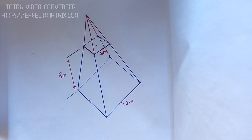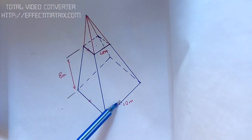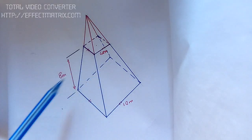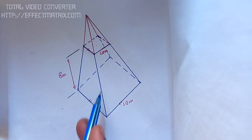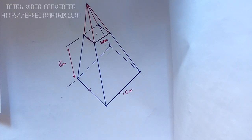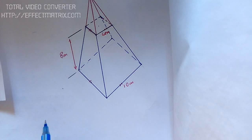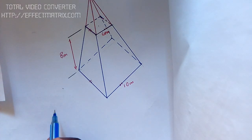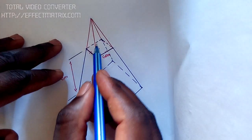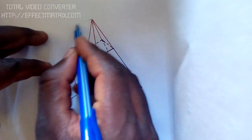We know that this is a square pyramid — looking at these tick marks on the sides, they confirm it's a square pyramid. To find the height of the smaller top pyramid, we're going to use the idea of similarity and congruence. So we'll call the unknown height x.